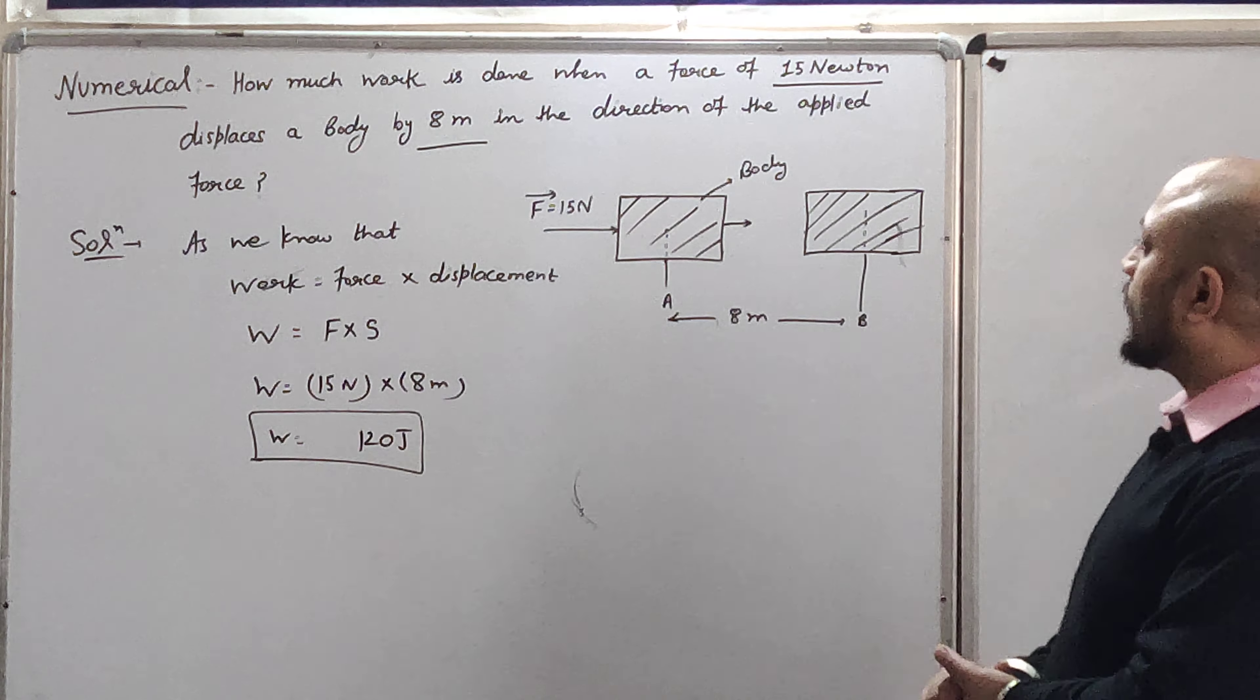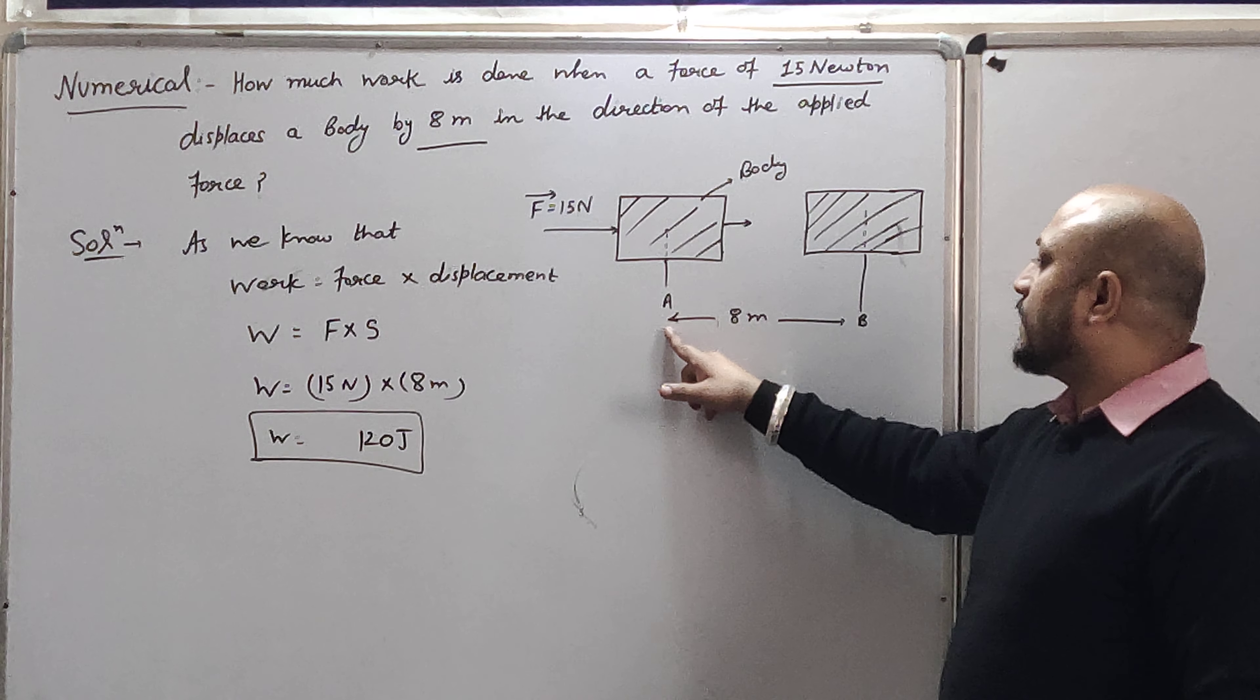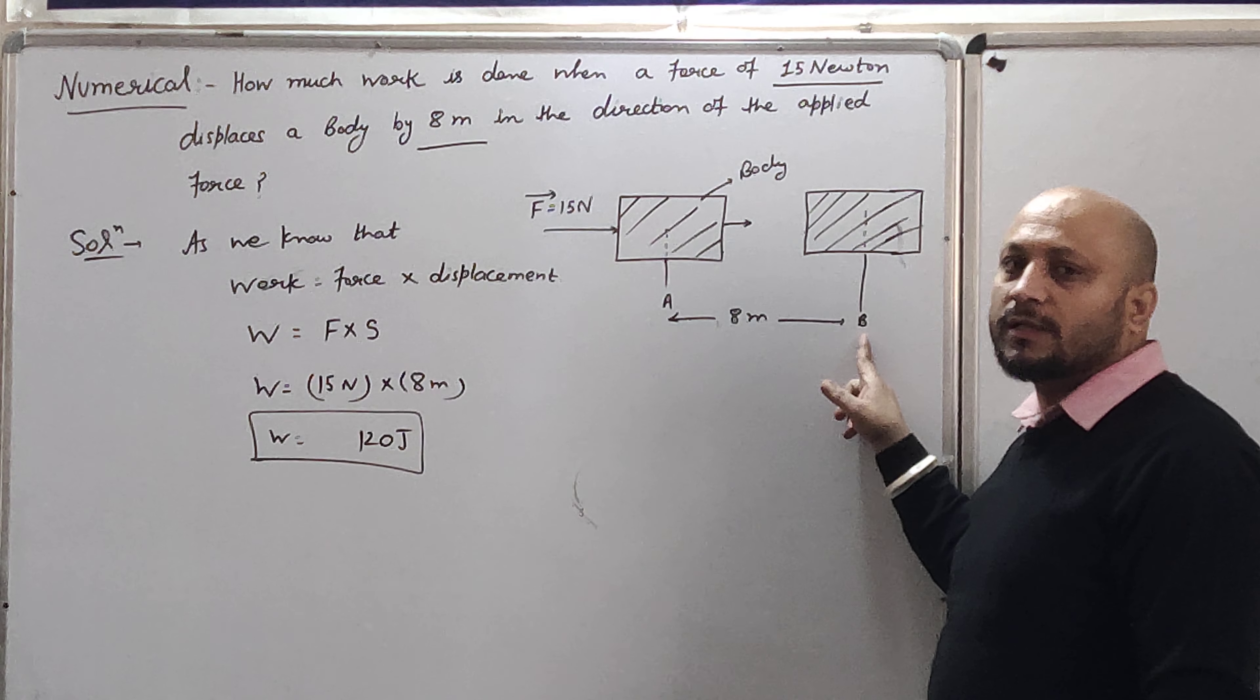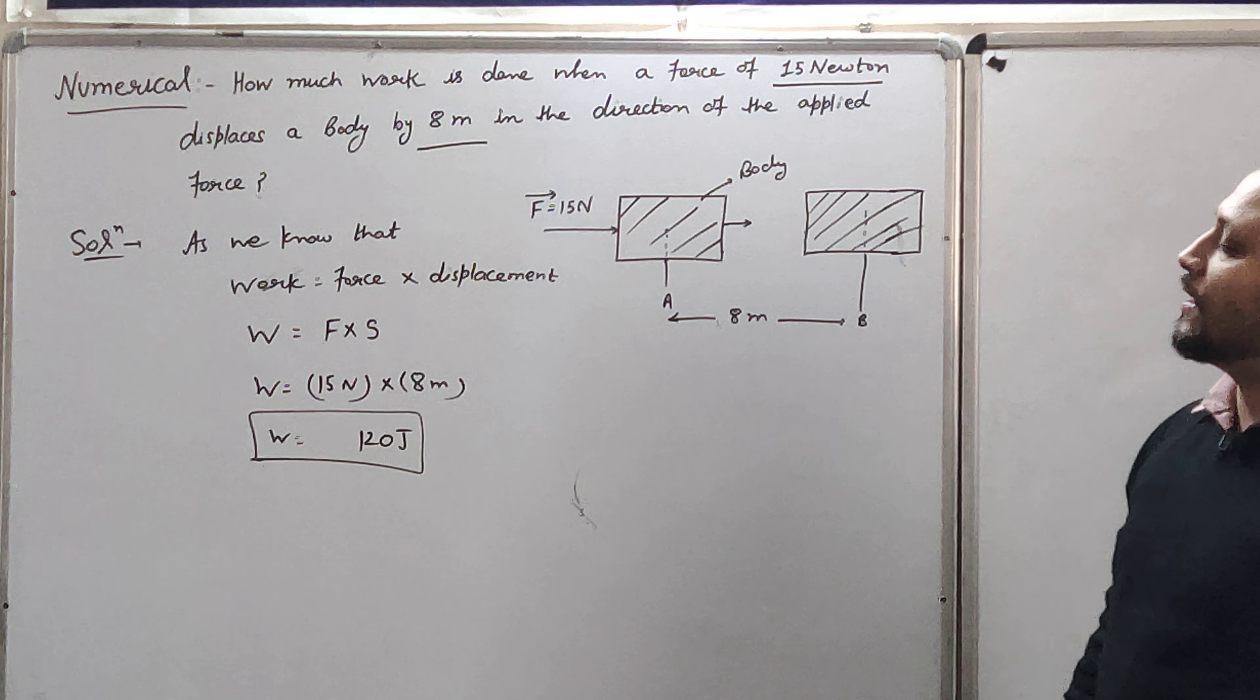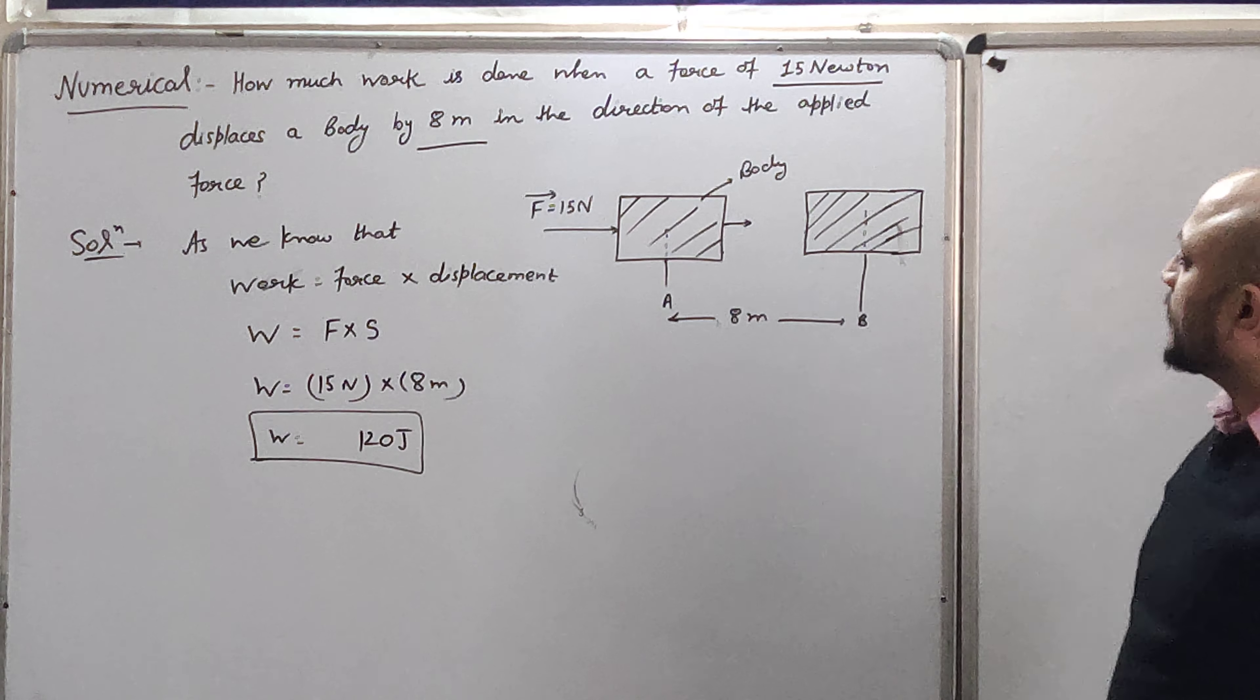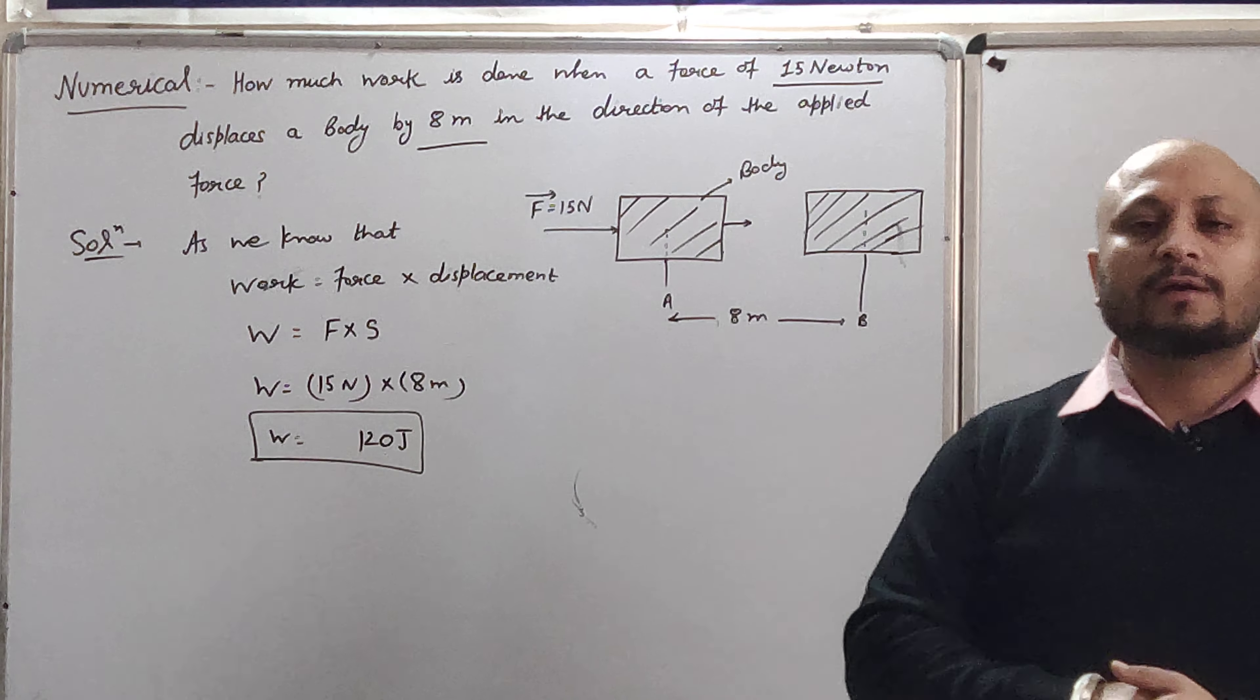अगर आप एक body की उपर 15 Newton का force apply करेंगे और body अगर उसी direction में displace हो जाती है, तो work हुआ है. Work की value होती है force into displacement. Force आपको given है 15 Newton. Displacement आपको given है 8 meter. तो work आगया 120 J.